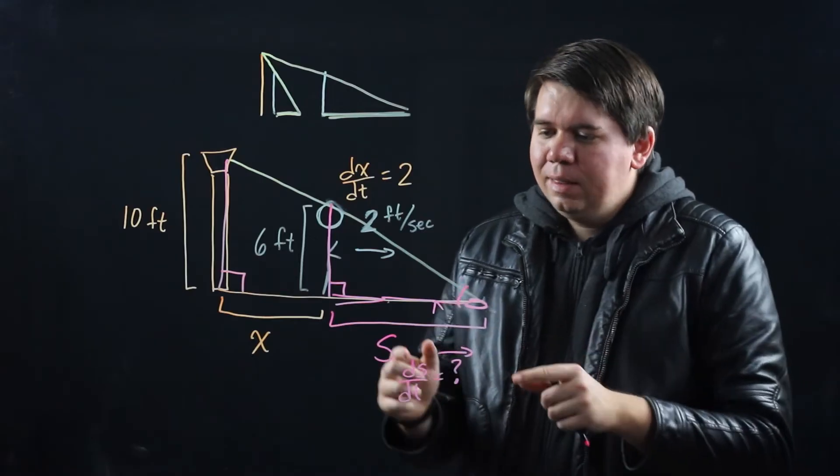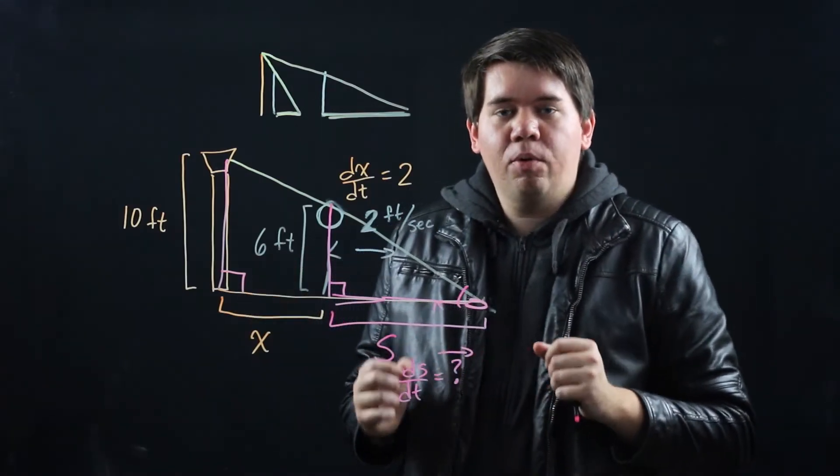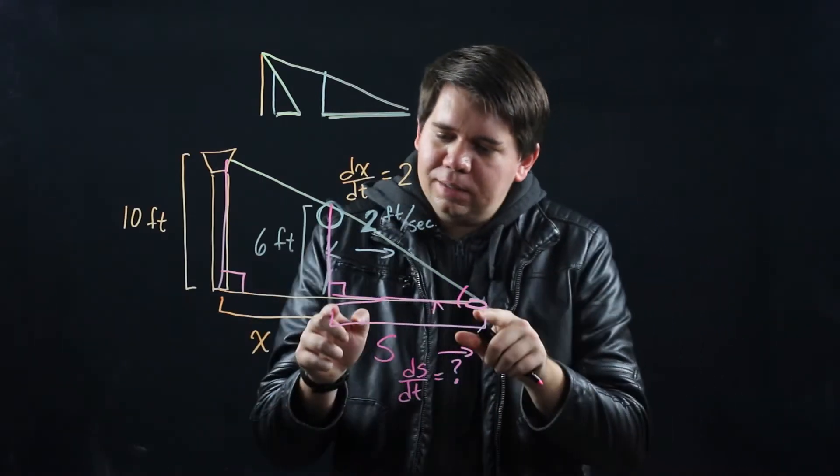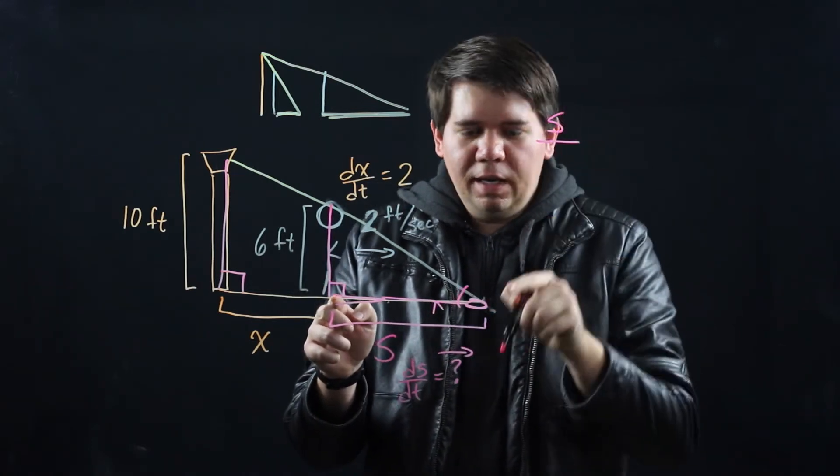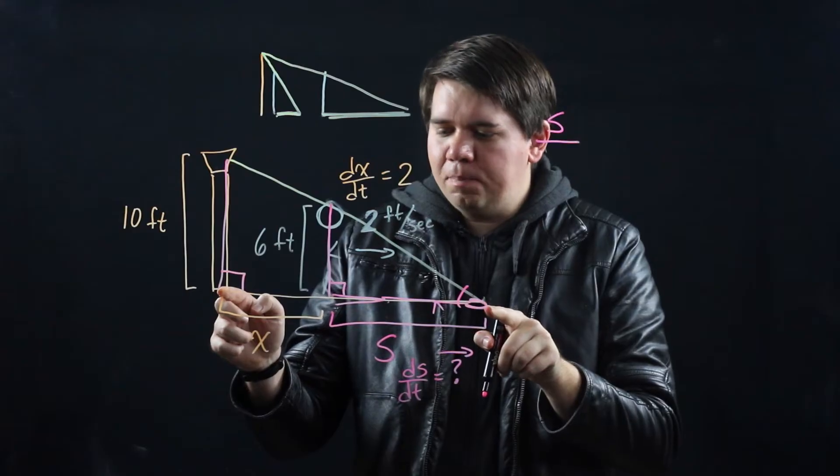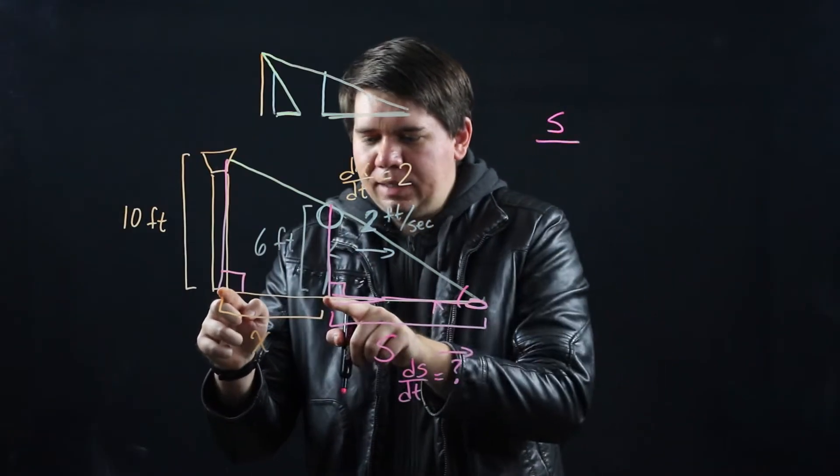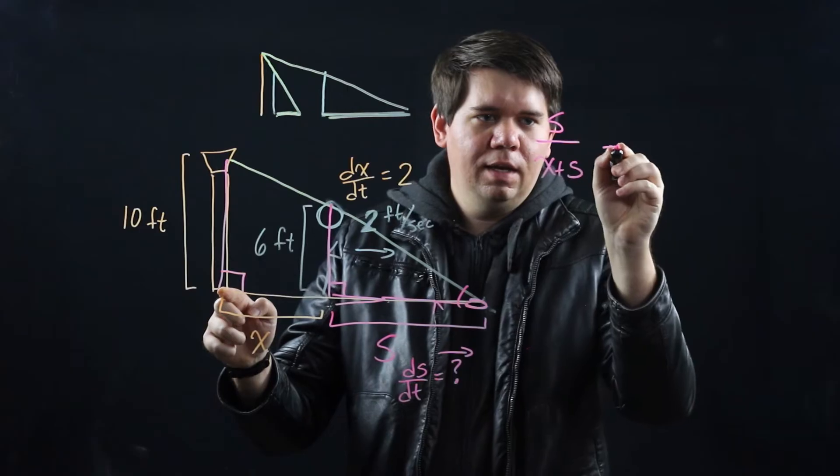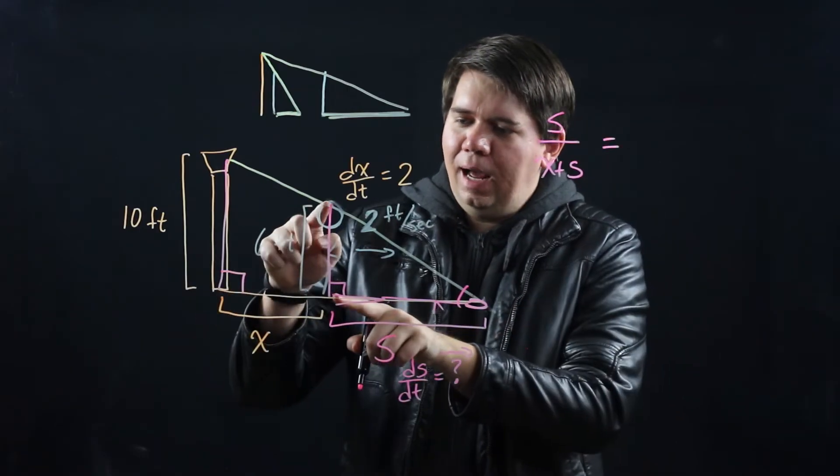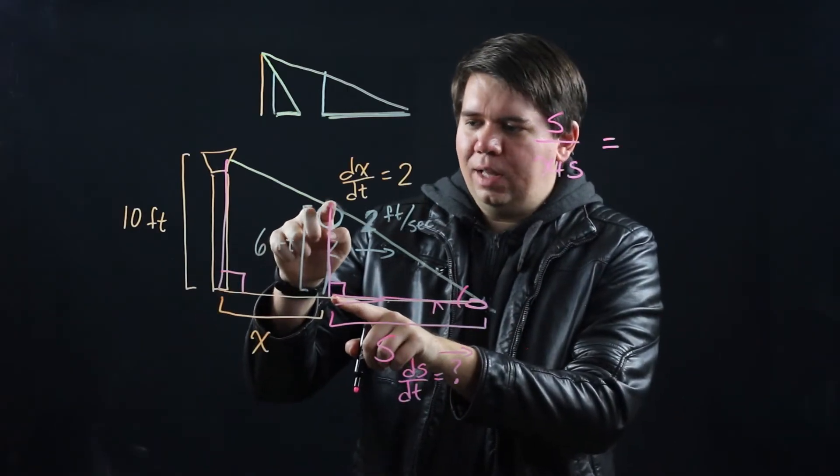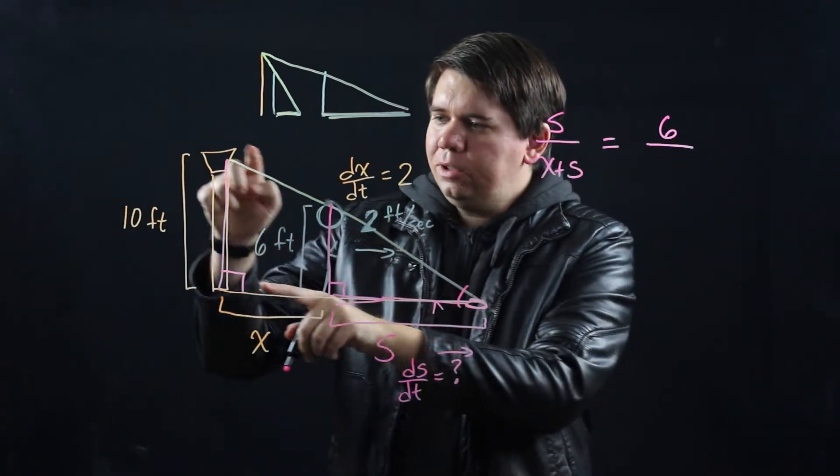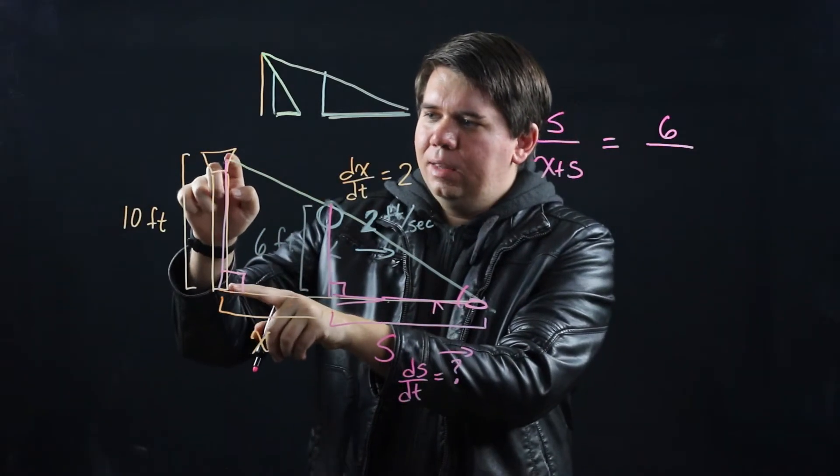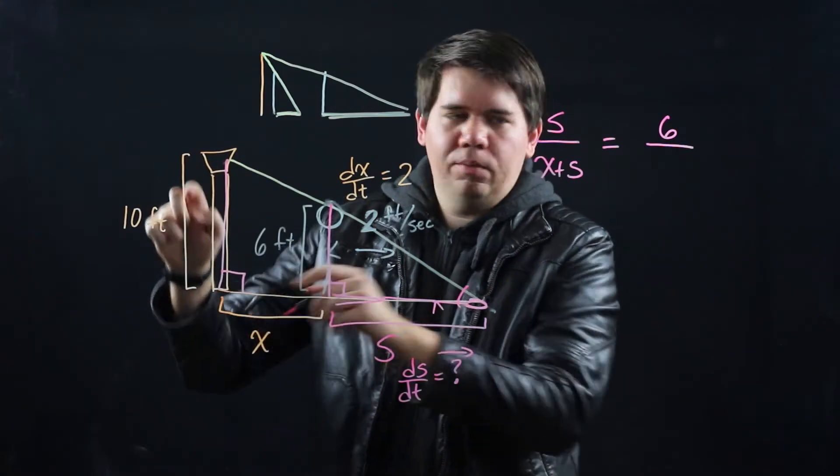In particular, the lengths of those sides are proportional to each other. We can say that this bottom leg of this triangle, s, is to the bottom leg of the big triangle, notice that's x plus s, as the height of this triangle, that's just the height of the person which is 6, is to the height of the lamppost, the height of this leg of the large triangle, which is 10.